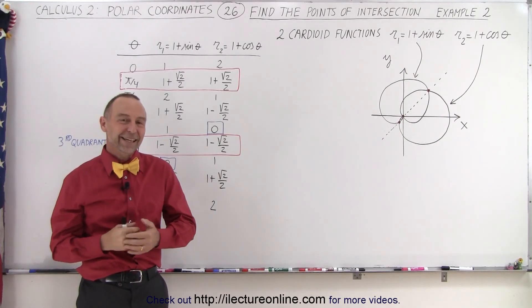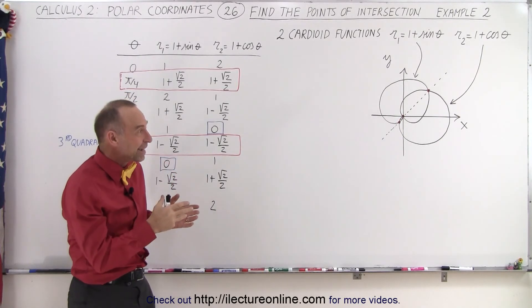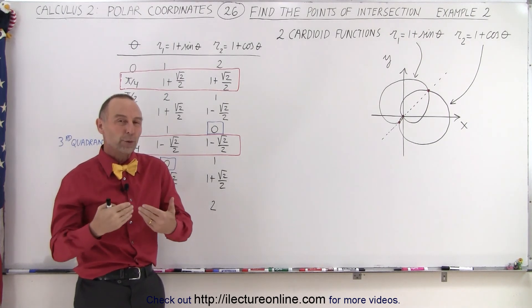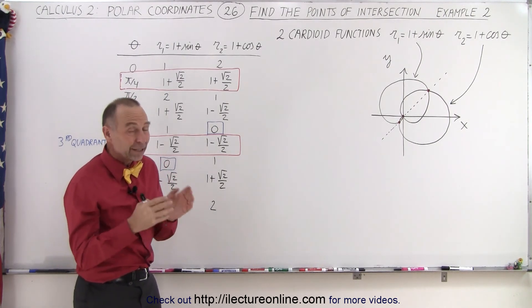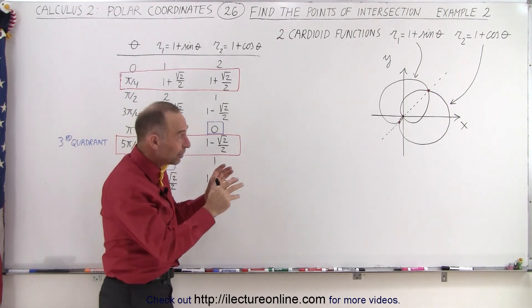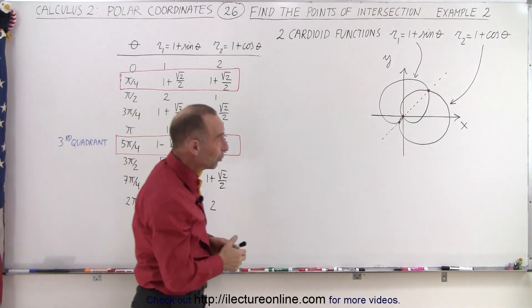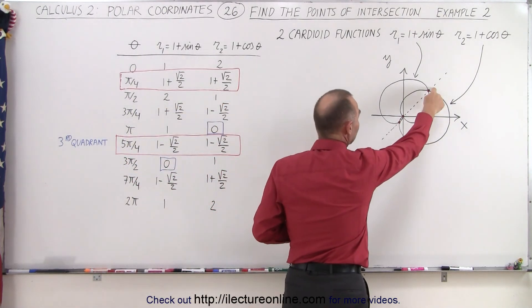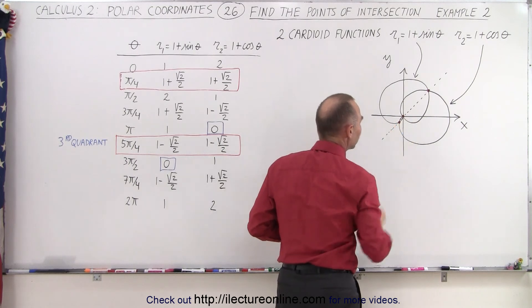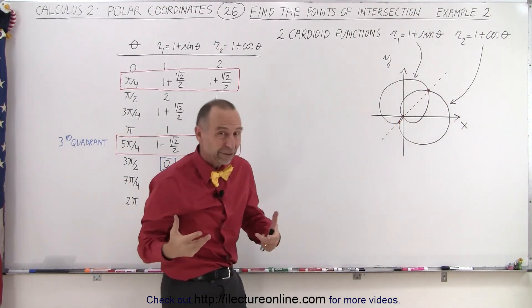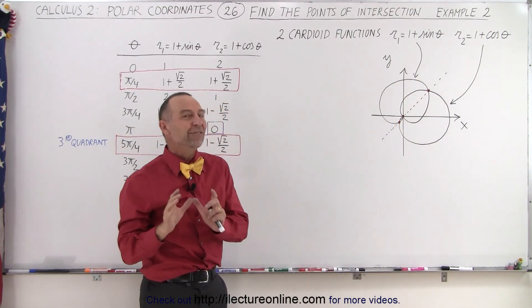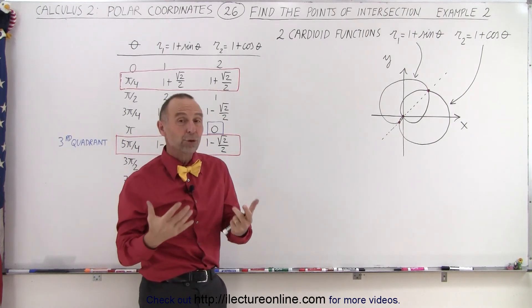Welcome to iLecturOnline. Here's a second example of how to find the points of intersection of two polar equations. Now again, if we draw graphically, you can see there's actually three places where the graphs overlap. One right there, one at the origin, and one down here. So we should be able to find those three, but it's not as easy as you might think. We'll show you why.